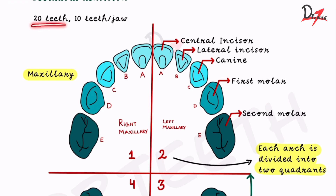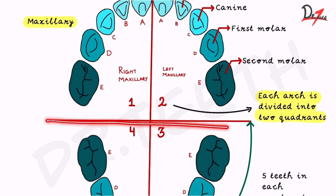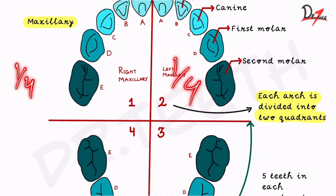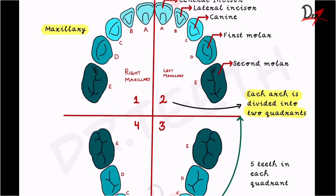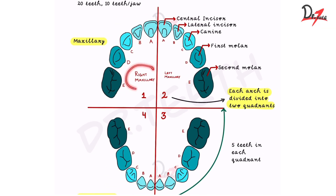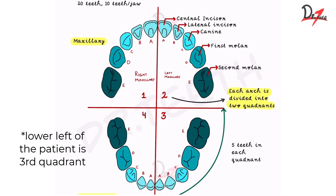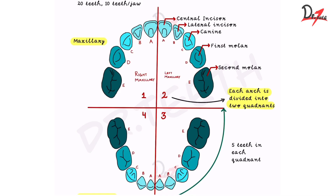There are a total of 20 teeth in the mouth of a child, meaning 10 teeth per jaw. We divide the upper and lower arches into quadrants — one-fourth each. The right maxillary portion is called the first quadrant — always remember this. Left maxillary is the second quadrant, lower right is the third quadrant, and lower left is the fourth quadrant of the patient.